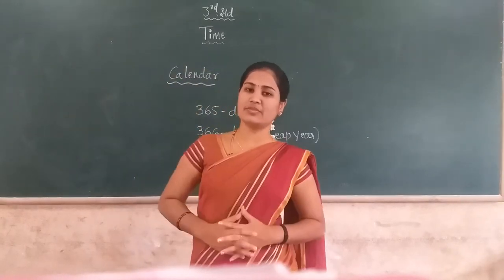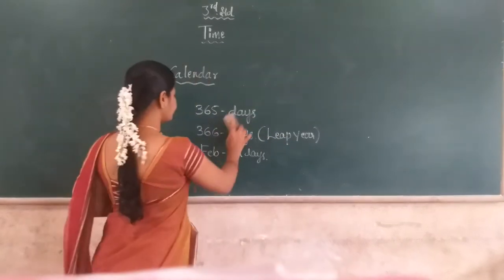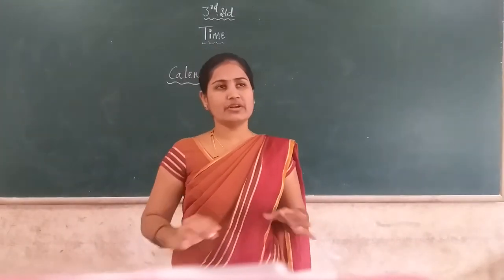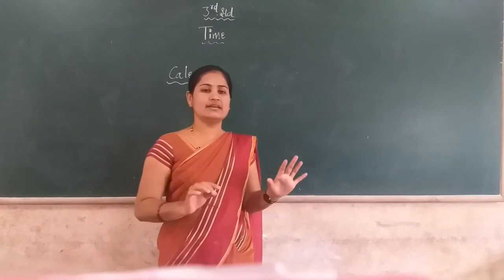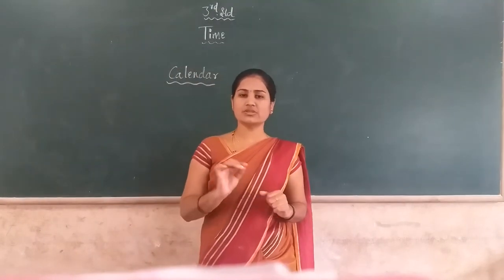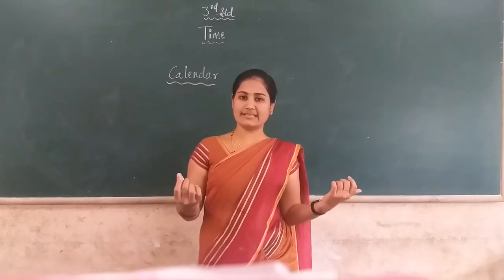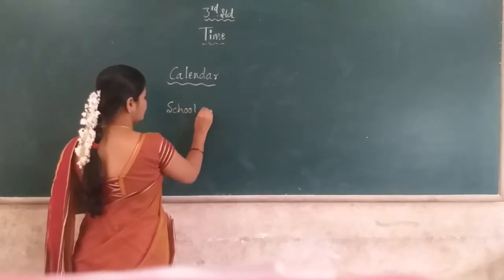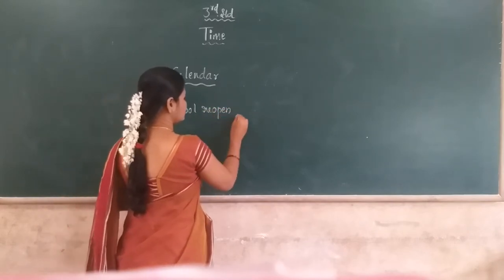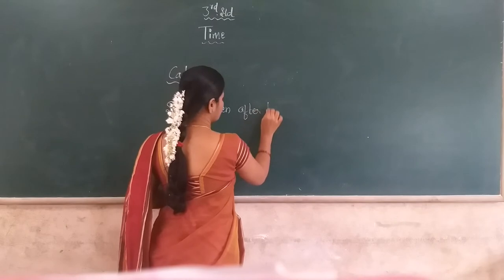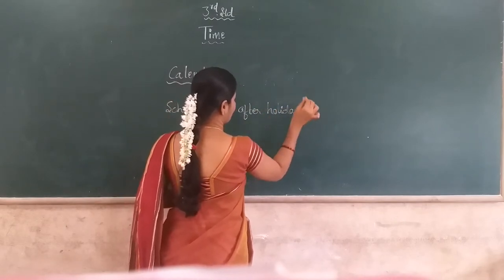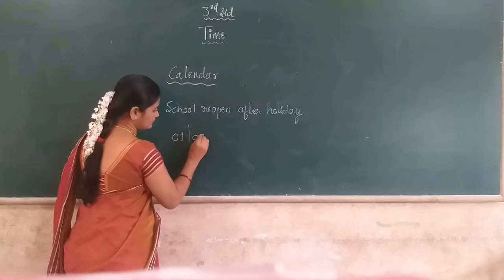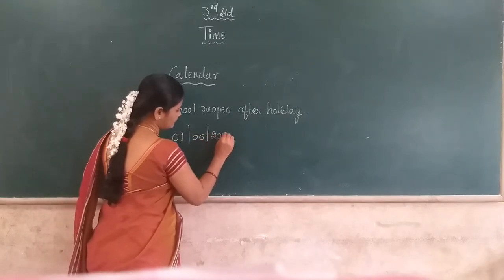This is some small information about the calendar. Next, how to write the day, date, month, and also year. For example, we write the day of your school reopening after the holidays: 1, 6, 2021.